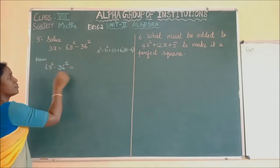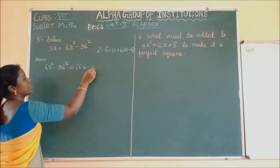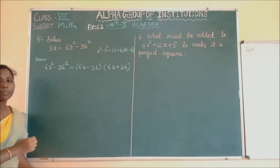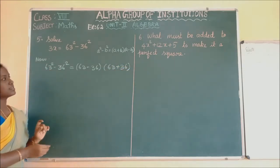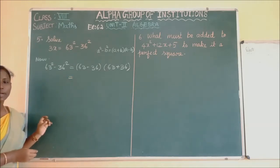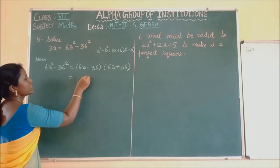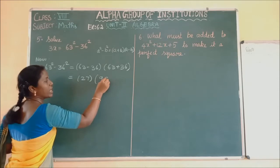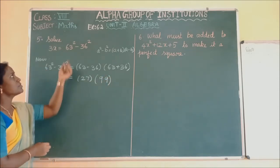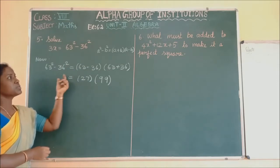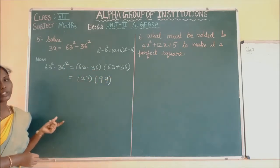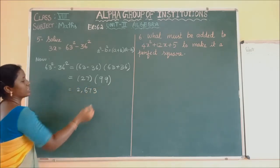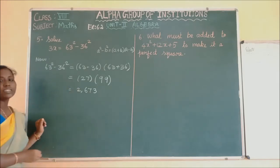What is 63 minus 36? It is 27. And 63 plus 36 is 99. Instead of squaring and subtracting, we are using the identity A plus B into A minus B — just getting the product of the two numbers. So the value is 27 times 99, which equals 2673.